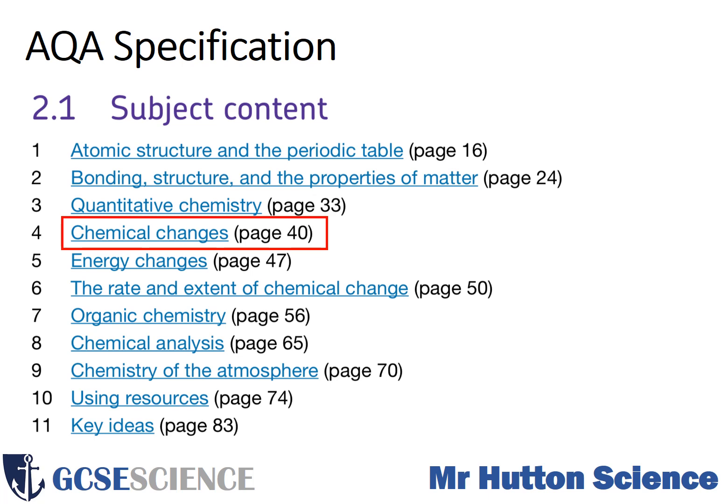Welcome back to the fourth video for the GCSE Chemistry AQA specification. We're looking at Topic 4 in Paper 1, which is Chemical Changes. If you do have a specification alongside you, this is on page 40.